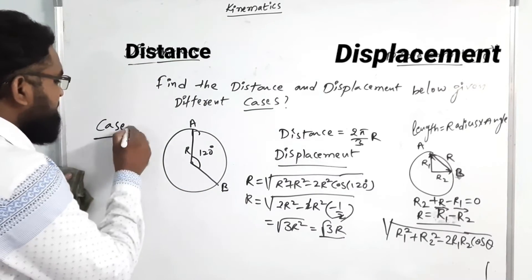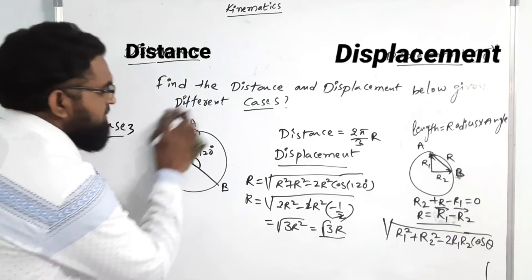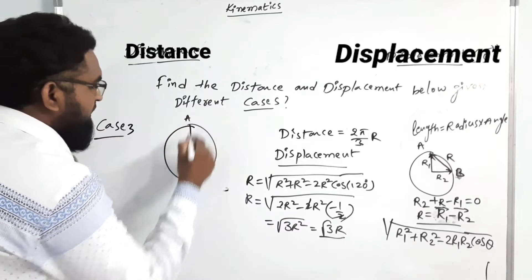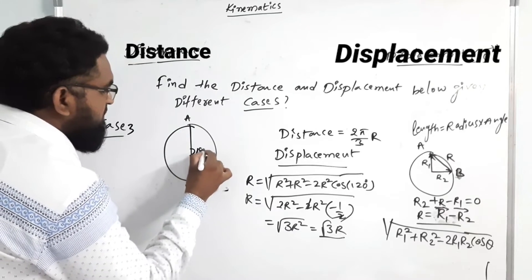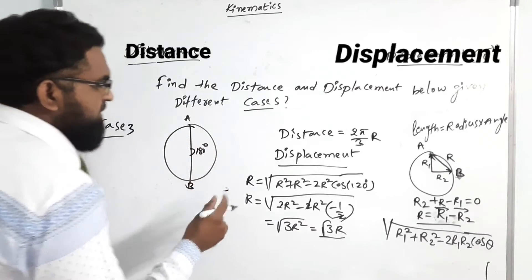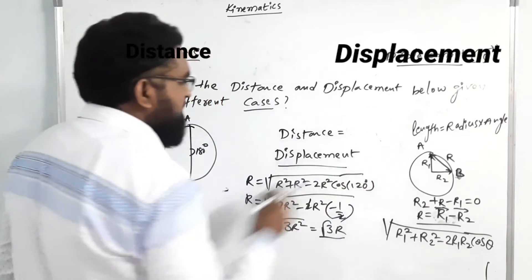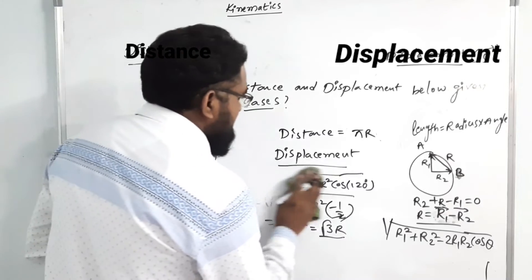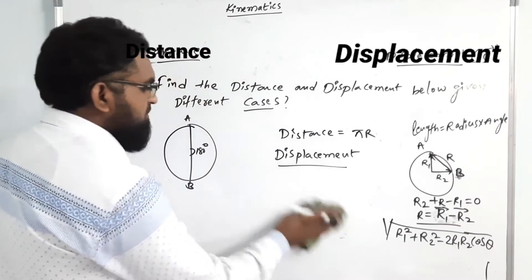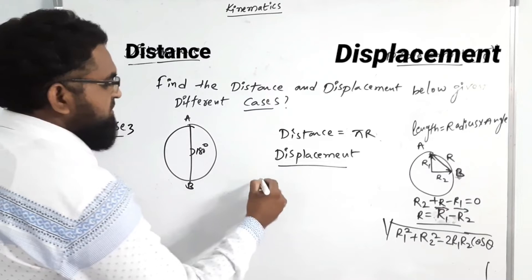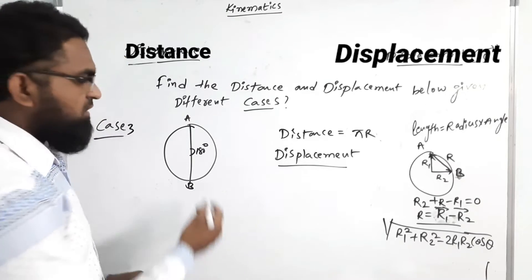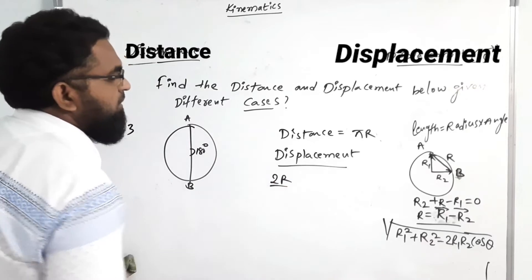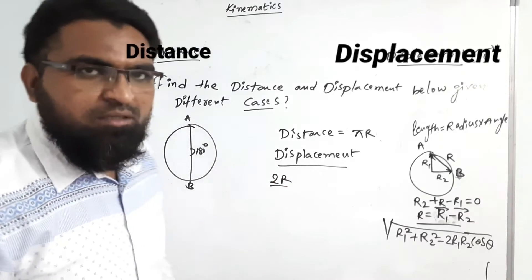Case 3: circle A to B with 180 degrees. Distance = πR. For displacement, we can use the same formula, or directly: the shortest distance between initial and final point is nothing but 2R. So displacement = 2R.